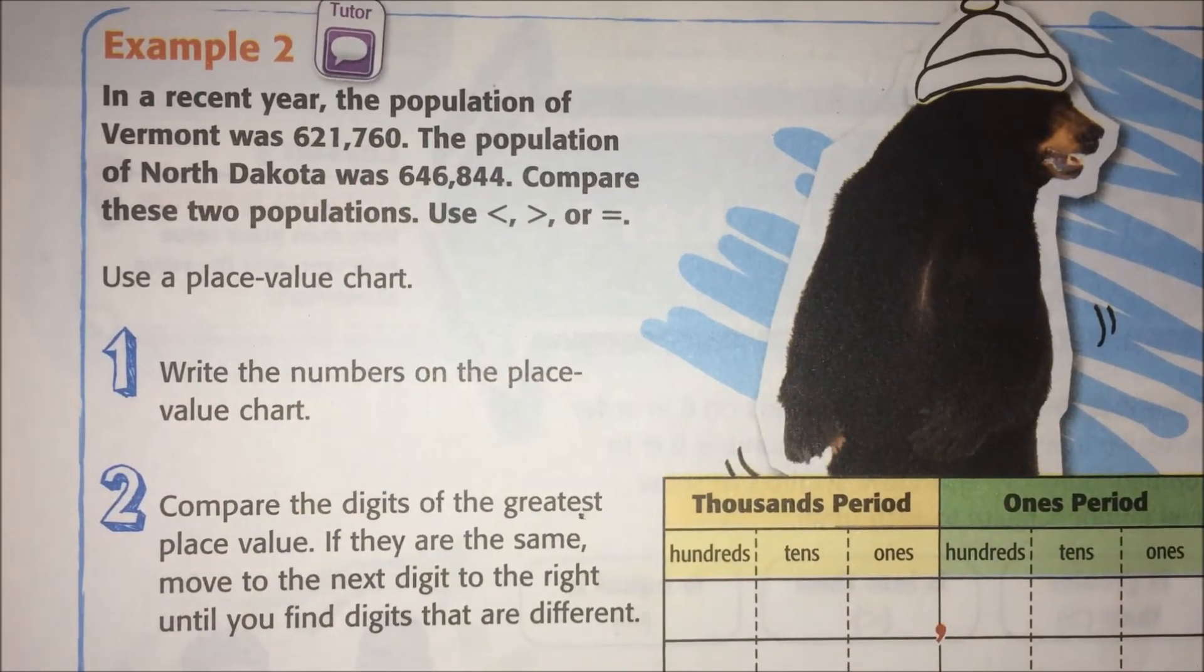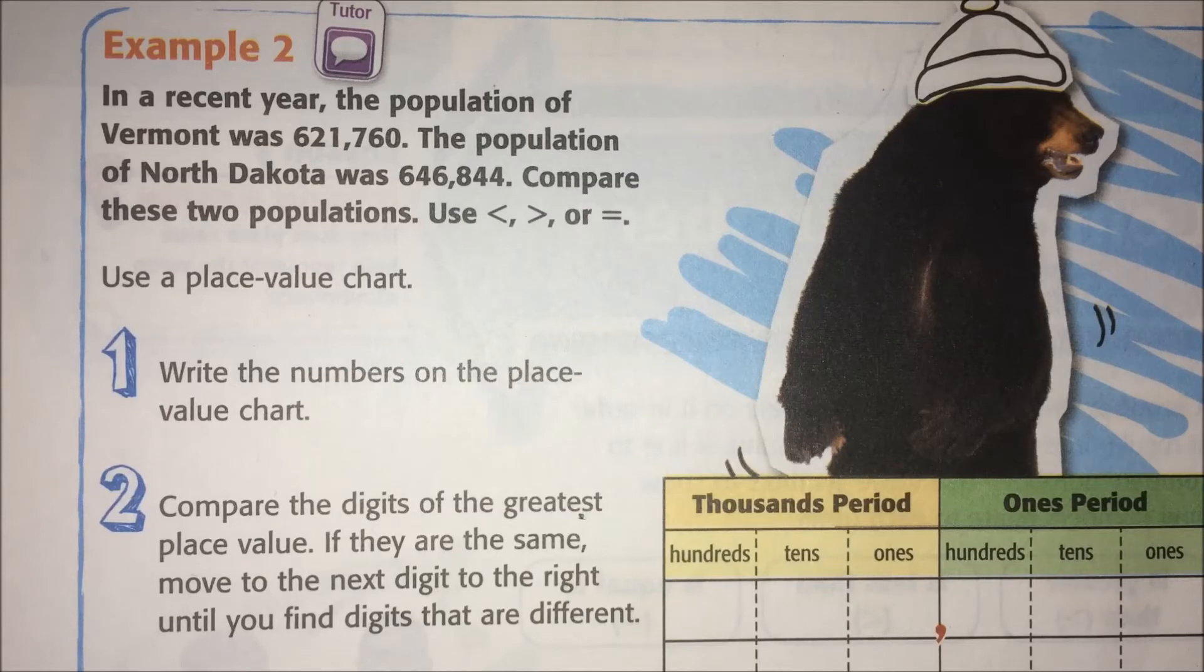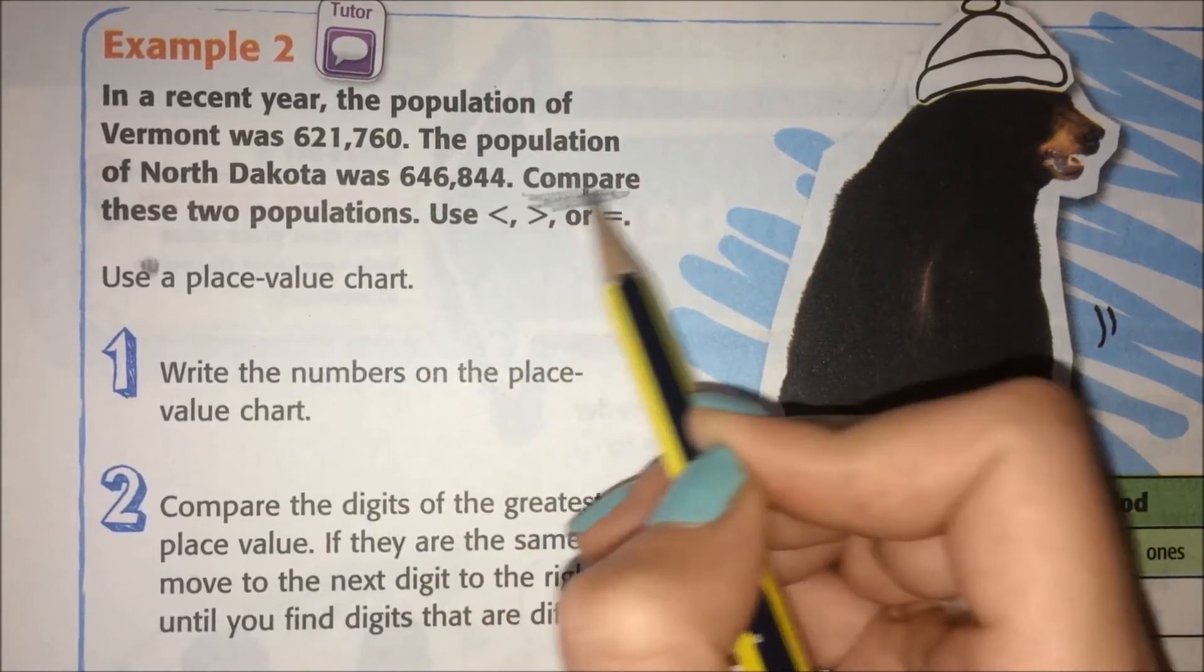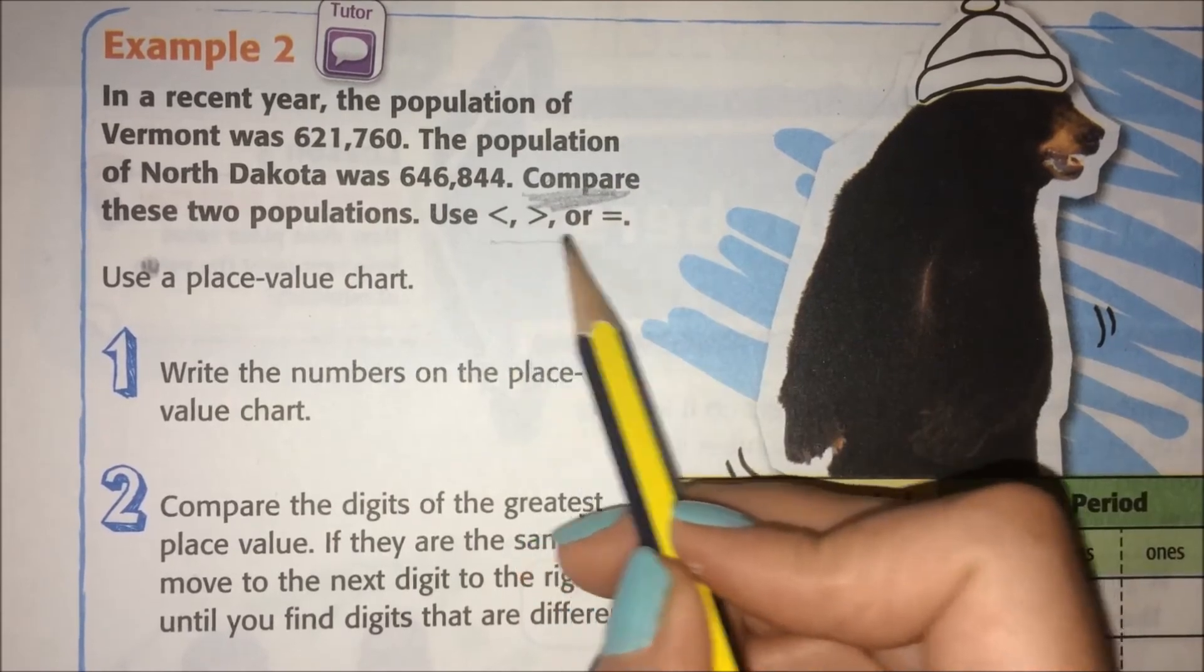Example two. In a recent year, the population of Vermont was 621,760. The population of North Dakota was 646,844. Compare these two populations. Use greater than, less than, or equals. Whenever you see these words compare from now on, you'll know that they want you to use these symbols.